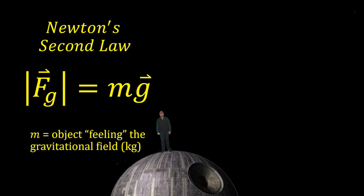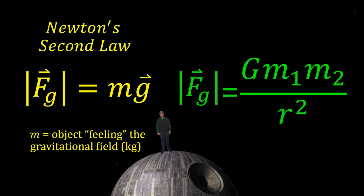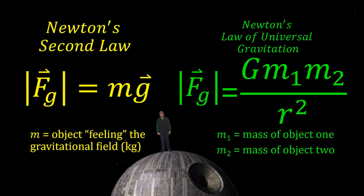The second equation is called Newton's universal law of gravitation. Force of gravity is G, that's that universal gravitational constant again, times mass 1, which is the mass of the first object, times mass 2, which is mass of the other object, all divided by that r squared term again.